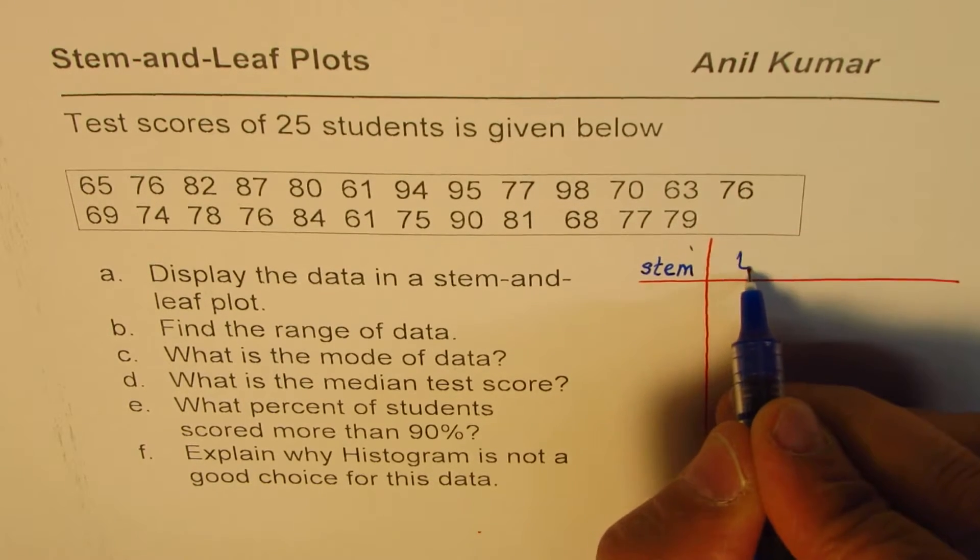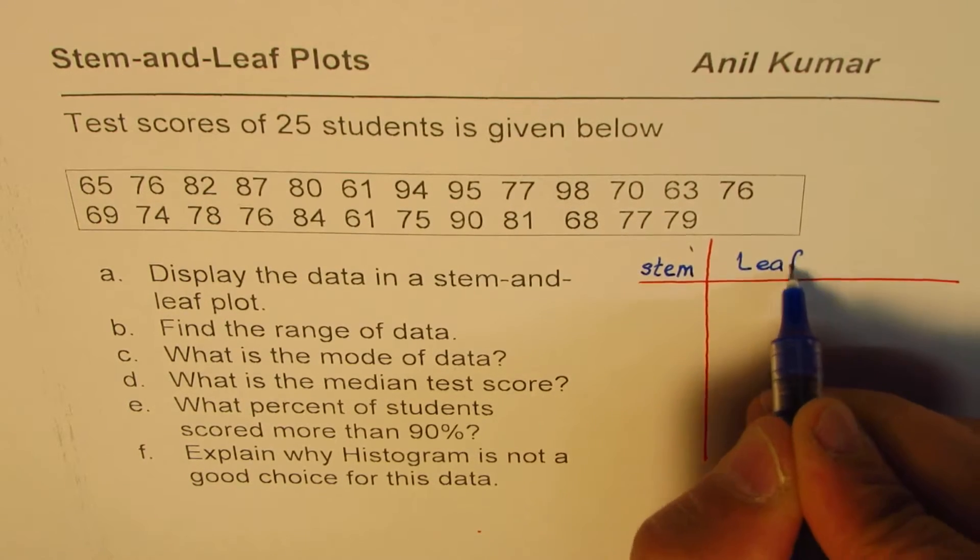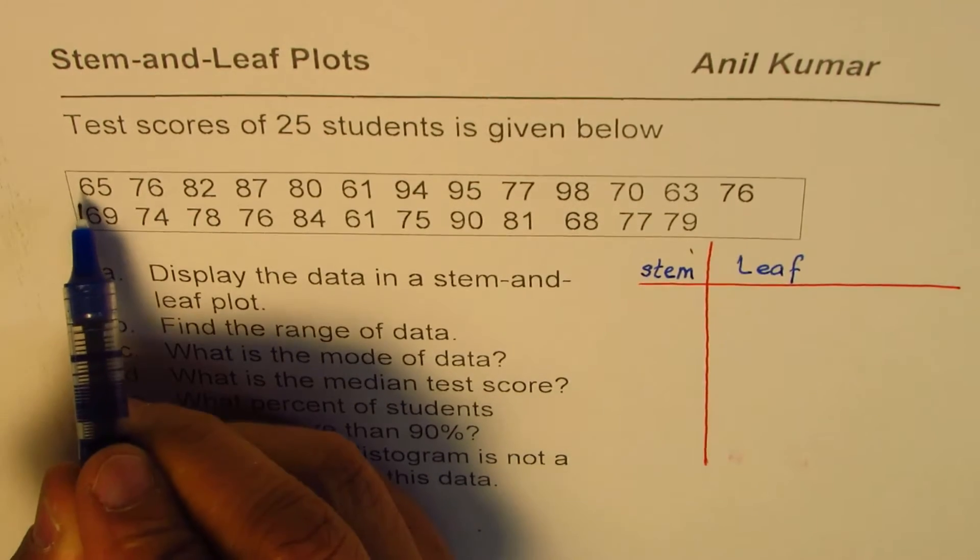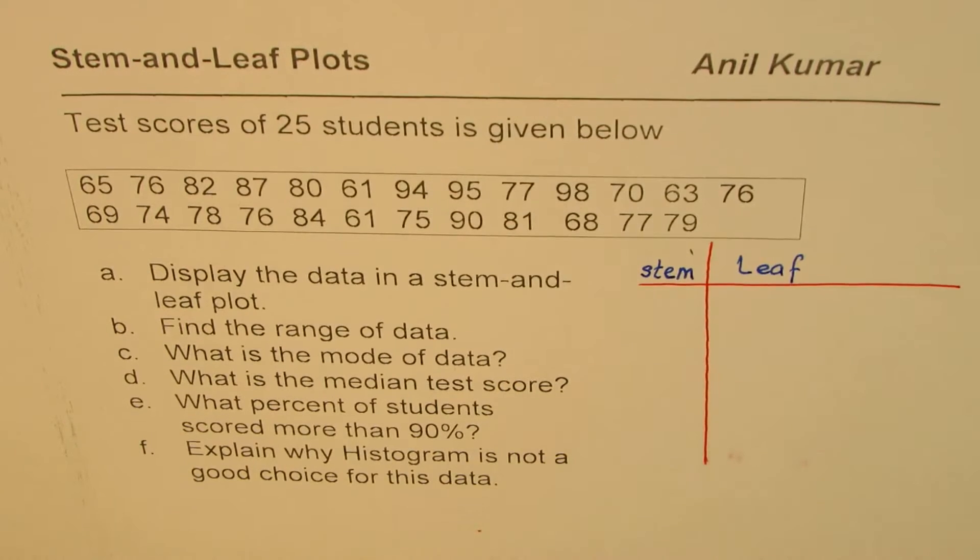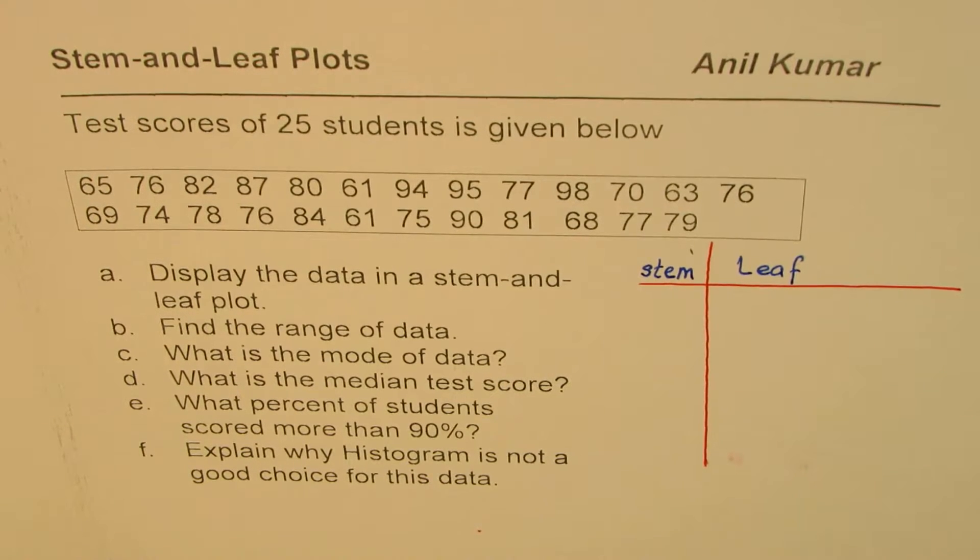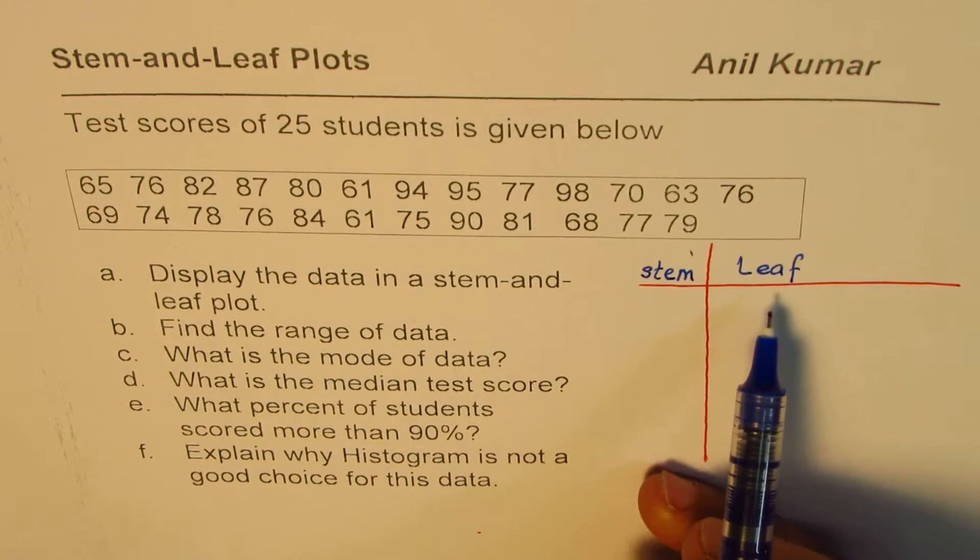And the other one is the leaf. Now in the stem we'll write the tens and in the leaf we always write ones. So that is how we are going to do it.